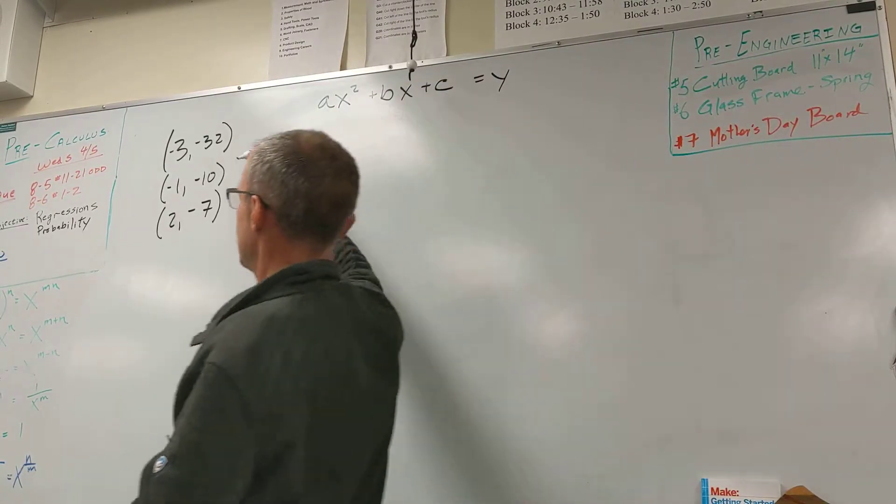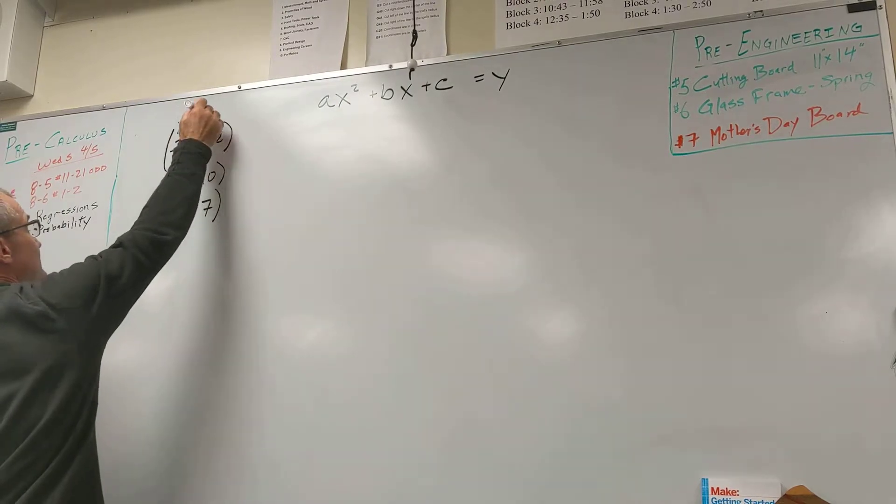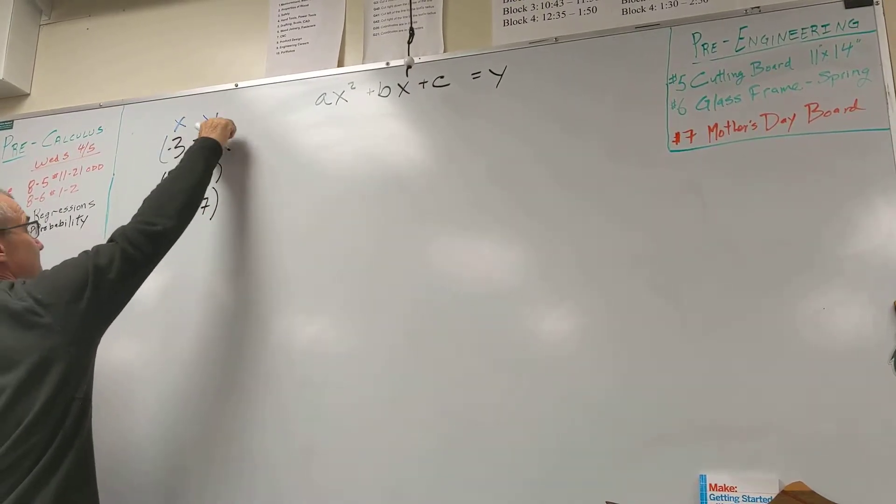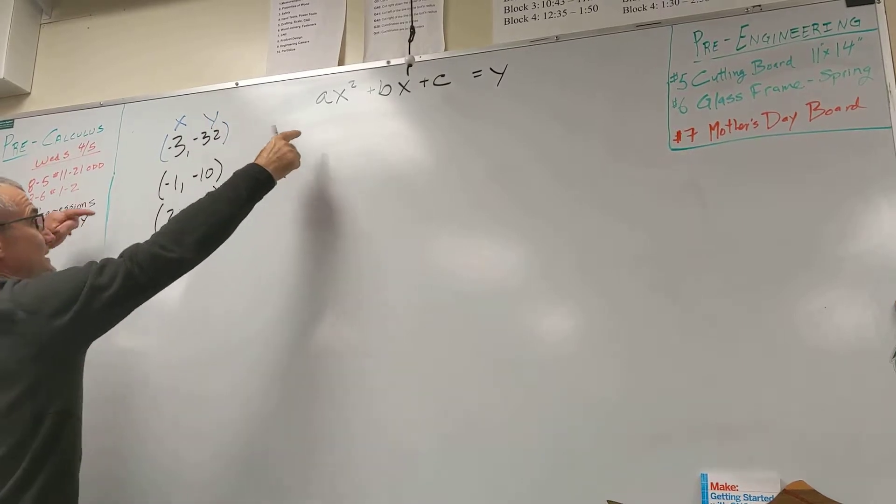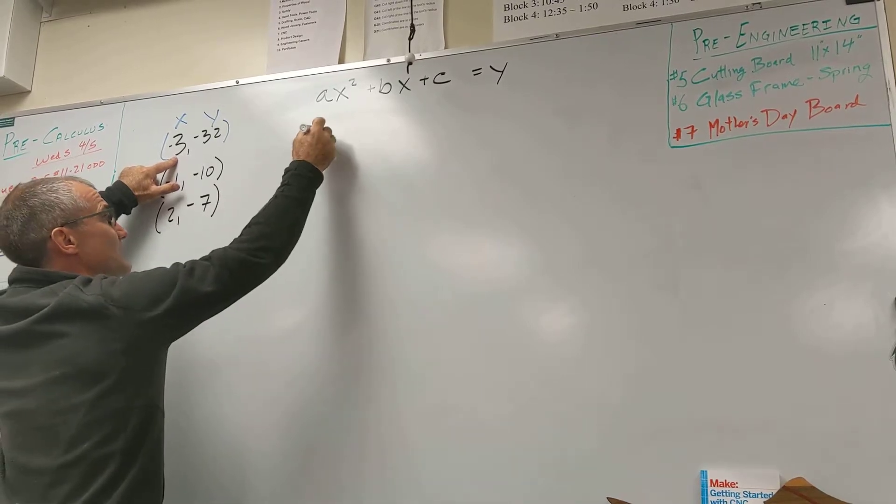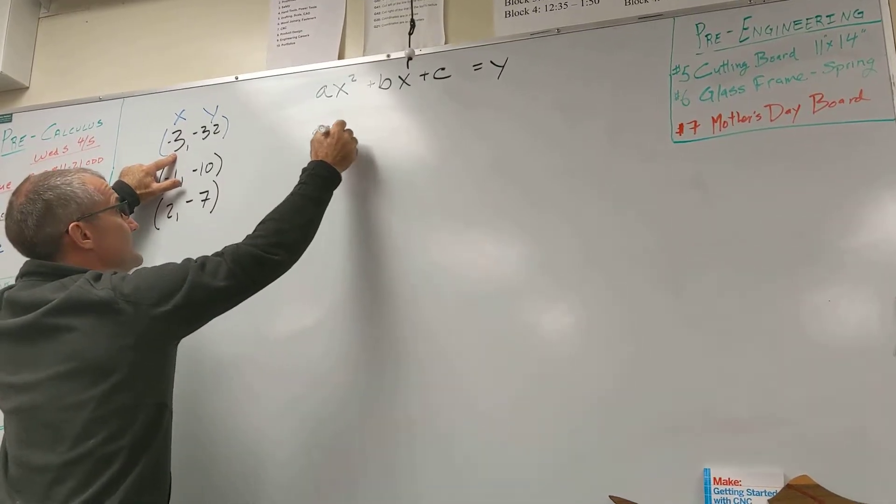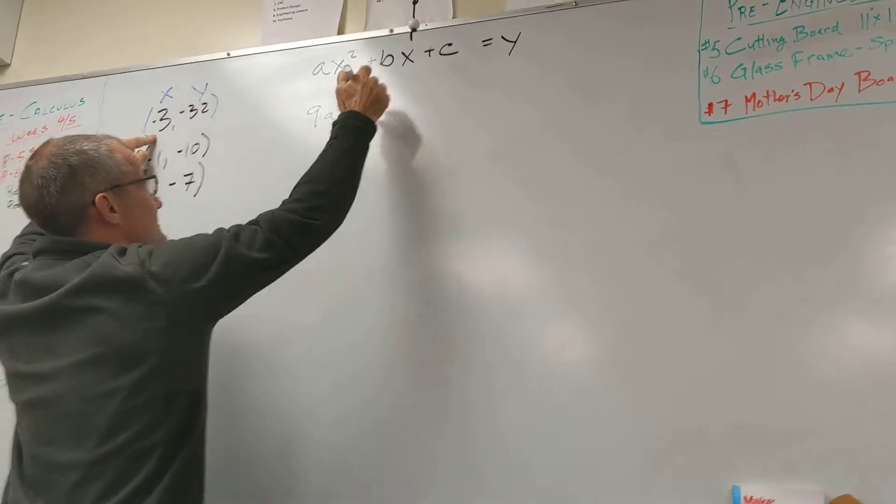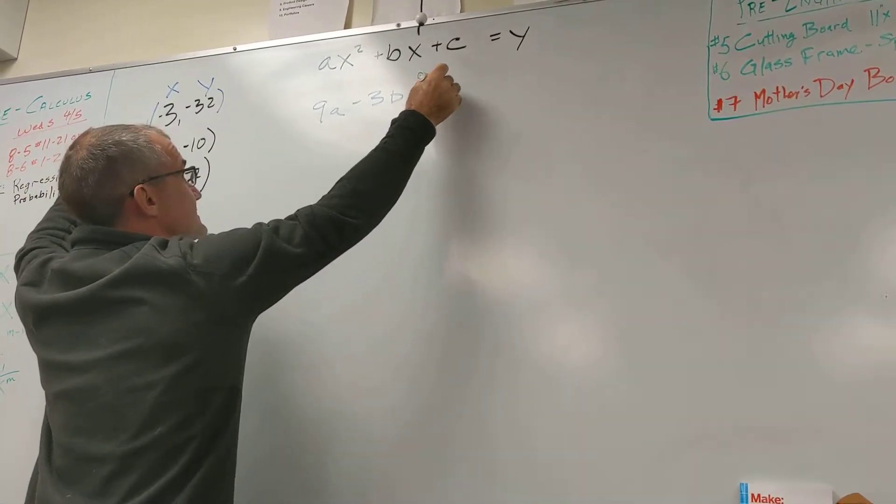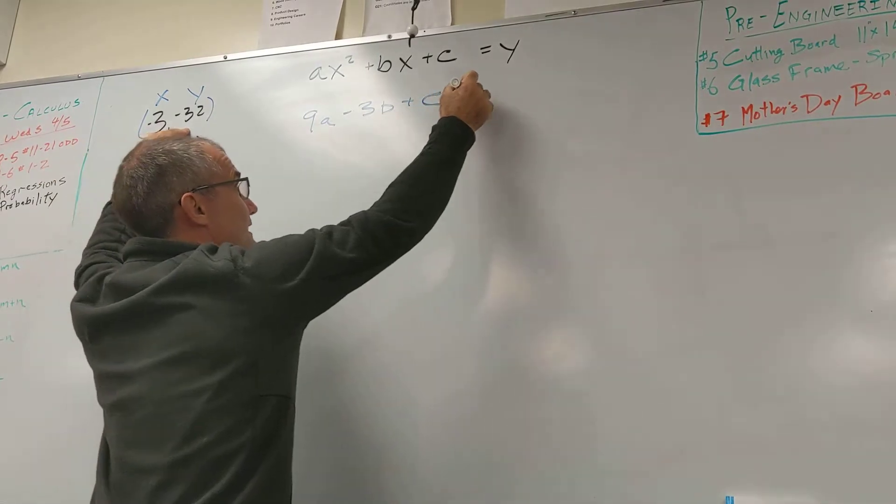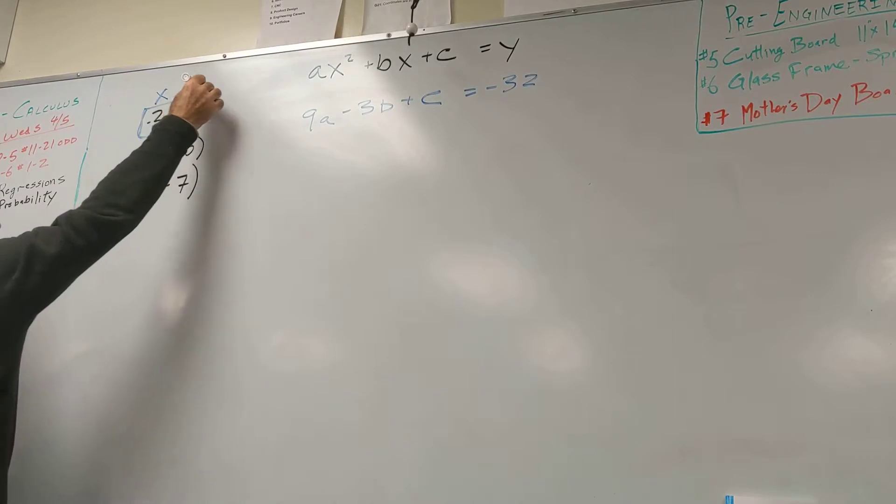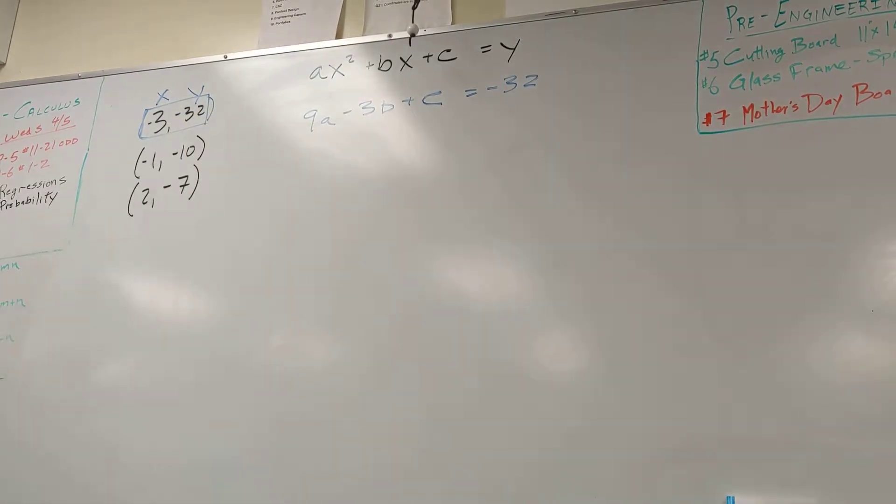So I'm going to take this first point right here. This is x and y. I'll do this one in blue. So I'm going to take this value for x and plug it wherever there is an x. So negative 3 squared is 9a plus b times x. So minus 3b plus c equals y. And y is negative 32. So this blue point is my first equation right there.